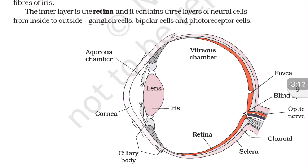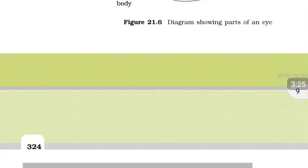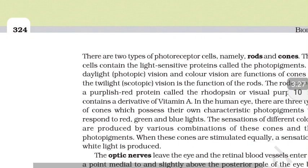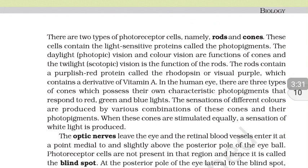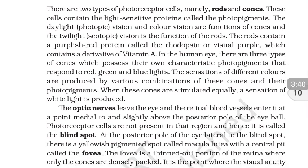The inner layer is the retina, and it contains three layers of neural cells from inside to outside: ganglionic cells, bipolar cells, and photoreceptor cells. There are two types of photoreceptor cells — rods and cones — which contain light-sensitive proteins called photopigments. Cones are responsible for daylight vision and color vision, while rods are responsible for twilight or scotopic vision.